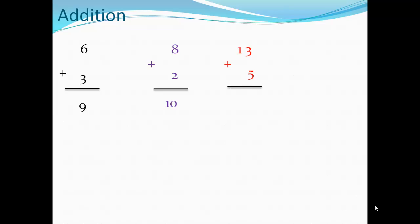Now, two digits plus one digit: thirteen plus five equals. Count after thirteen — thirteen is bigger than five — so the answer will be eighteen.